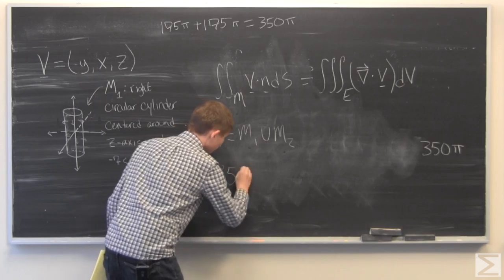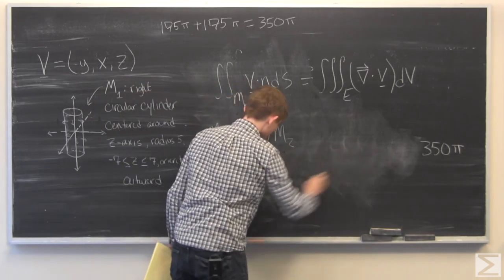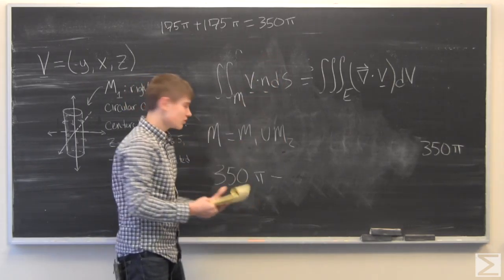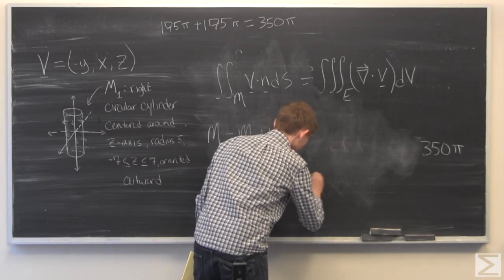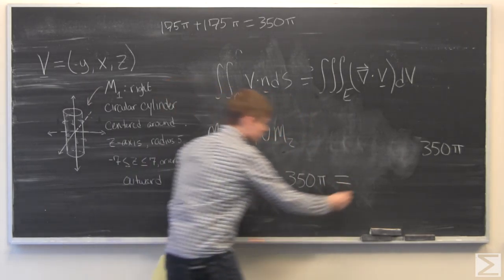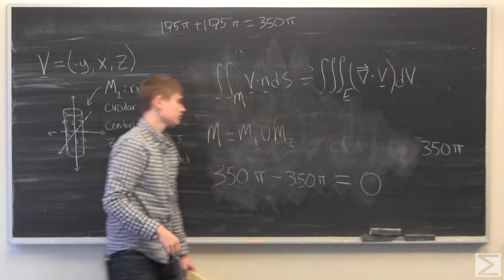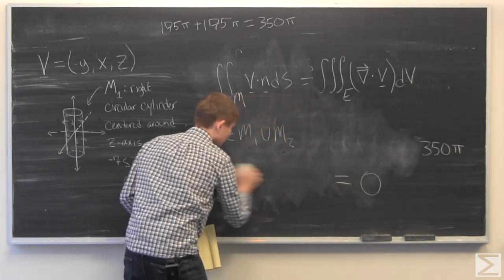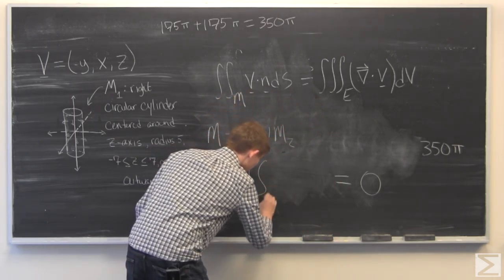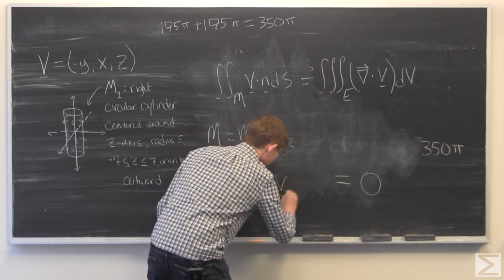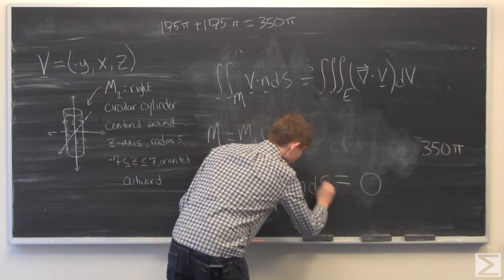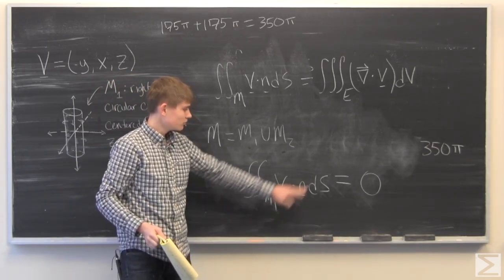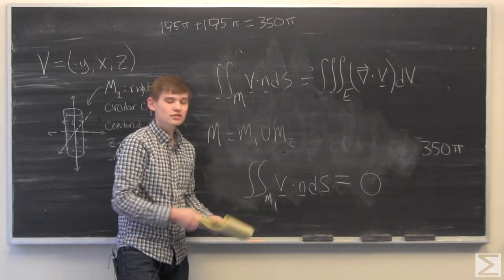The flux through M1 is going to be the flux of M minus the flux of M2. So we have 350 pi for the flux of M, minus the flux of M2 which is 350 pi. And so the result is 0, and this means that the flux of V through M1 is equal to 0. And that is all of this problem.